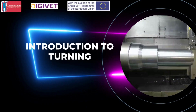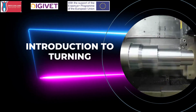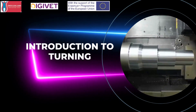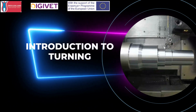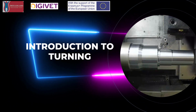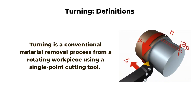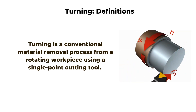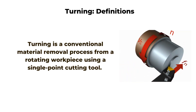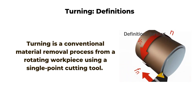Introduction to Turning. In this course, we will learn the basic cutting parameters and their effects on the turning process. Turning is a conventional material removal process from a rotating workpiece using a single-point cutting tool moving linearly.